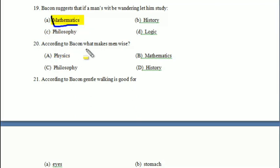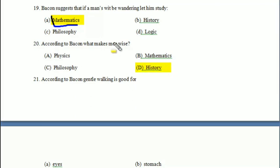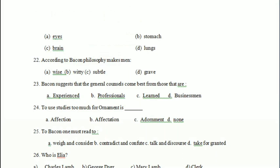According to Bacon, what makes a wise man — physics, mathematics, philosophy, or history? Your answer is 'history.' If you want to be a wise man, study history. According to Bacon, gentle walking is good for — eyes, stomach, brain, or lungs? Your answer is 'stomach.'